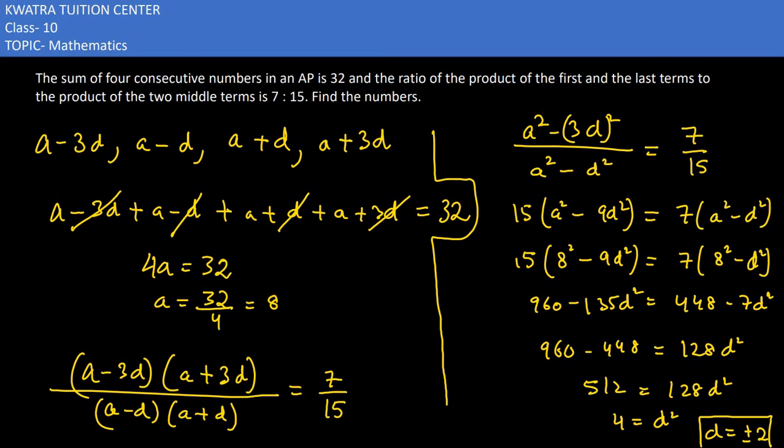So if a is equal to 8 and d is equal to positive 2, what will our AP be? If you substitute in these 4 values a minus 3d, then the first value is 2, and the second will be 6, the third would be 10, and the fourth would be 14.